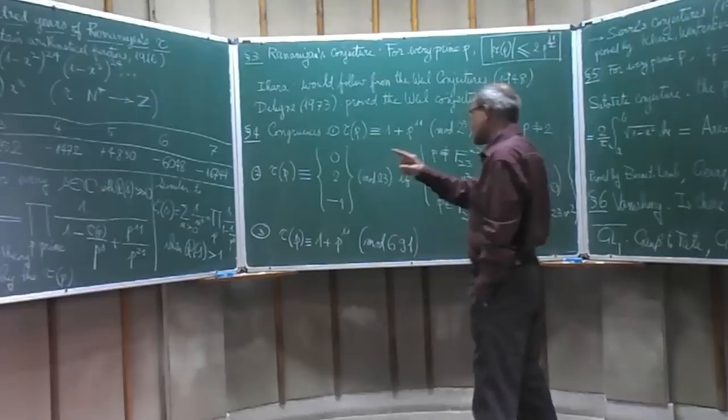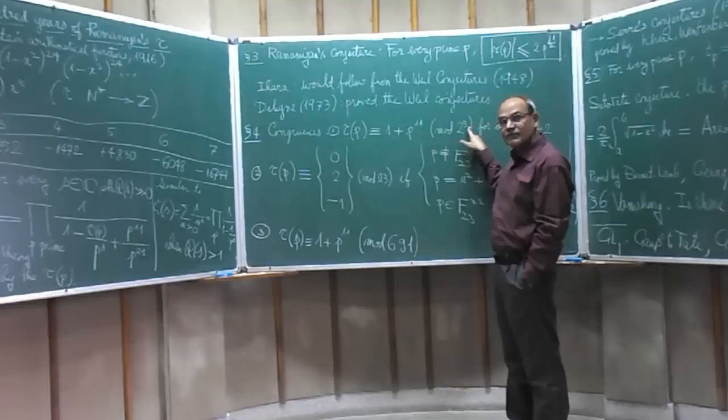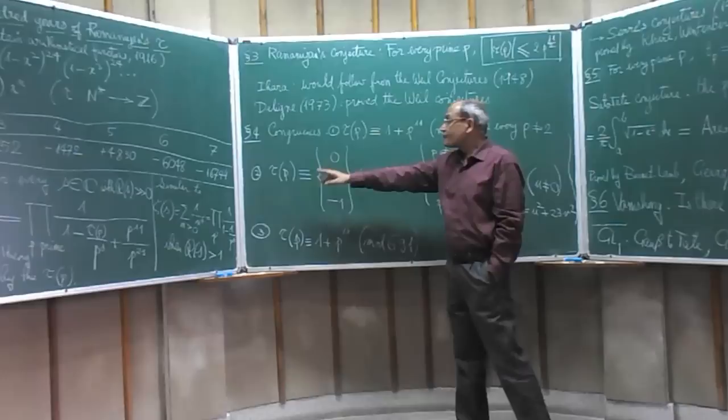The third set of observations which Ramanujan made about this tau function are these congruences. For example, for every odd prime p, tau of p is 1 plus p to the 11, modulo 2 to the 5. Now this was proved soon afterwards by various people.